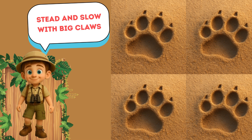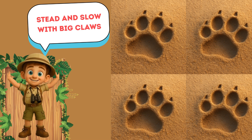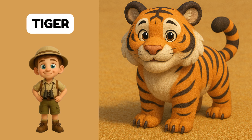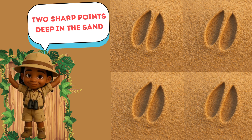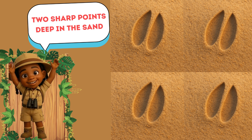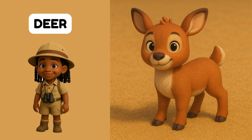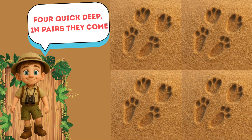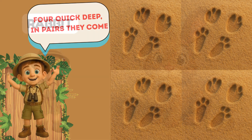Whose footprints are those? Steady and slow with big claws — that's a tiger track. Whose footprints are those? Two sharp points deep in the sand — that's a deer track.